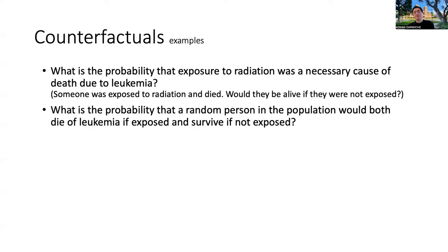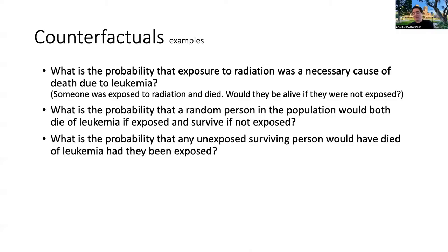Here's another question: what is the probability that a random person in the population would both die of leukemia if exposed and survive if not exposed? And yet another: what is the probability that any unexposed surviving person would have died of leukemia had they been exposed? They may look similar, but they are very distinct questions — selected carefully as examples of prototypical queries that have been subjected to a lot of study.